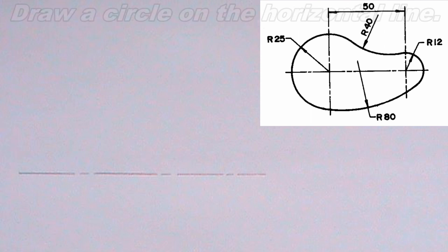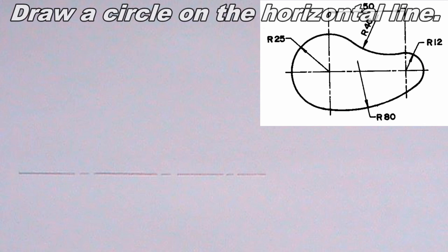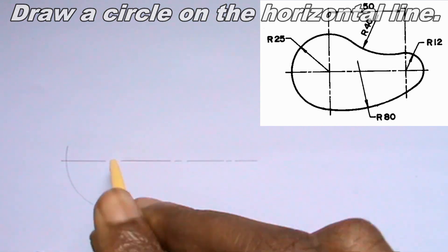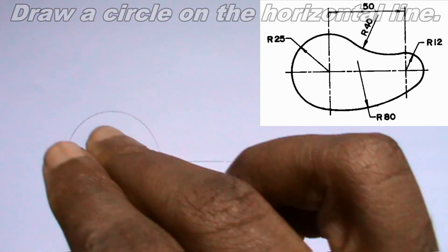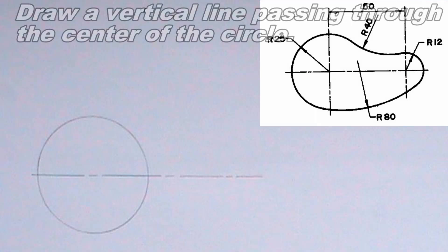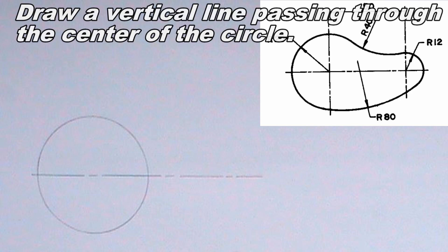The next thing I will do is to draw a circle on the horizontal line. I will draw a circle of radius 25 millimeters. Next, I will draw a vertical line passing through the center of the circle. This line should also be a thin chain line.